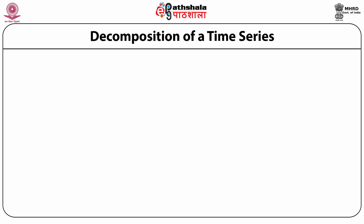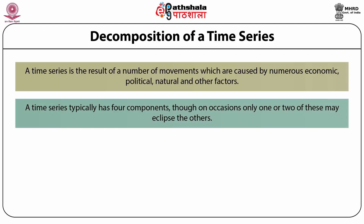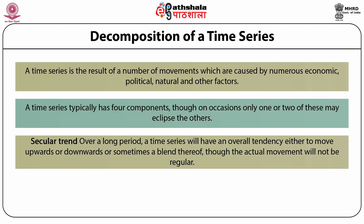If we decompose a time series, it means the time series is a result of a number of movements caused by numerous economic, political, natural, and other factors. The analysis of time series means decomposing past data into components and then projecting them forward. A time series typically has four components. First is the secular trend: over a long period, a time series will have an overall tendency to move upward, downward, or a blend of both. This tendency is known as the secular trend.